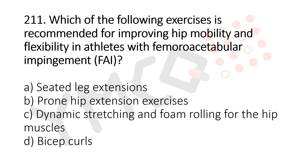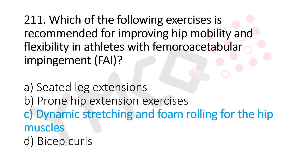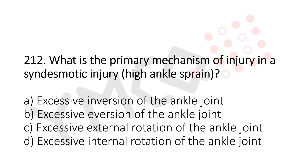Question 211: Which of the following exercises is recommended for improving hip mobility and flexibility in athletes with femoroacetabular impingement (FAI)? Option A: seated leg extension. Option B: prone hip extension exercises. Option C: dynamic stretching and foam rolling for the hip muscles. Option D: bicep curl. The answer is option C, dynamic stretching and foam rolling for the hip muscles.